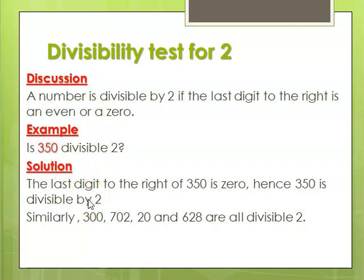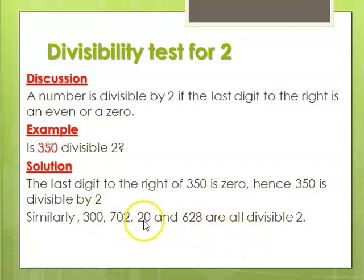Similarly, numbers like 300, 702, 20, 6, and 28 are all divisible by 2. The reason is they end with a 0 or an even number.